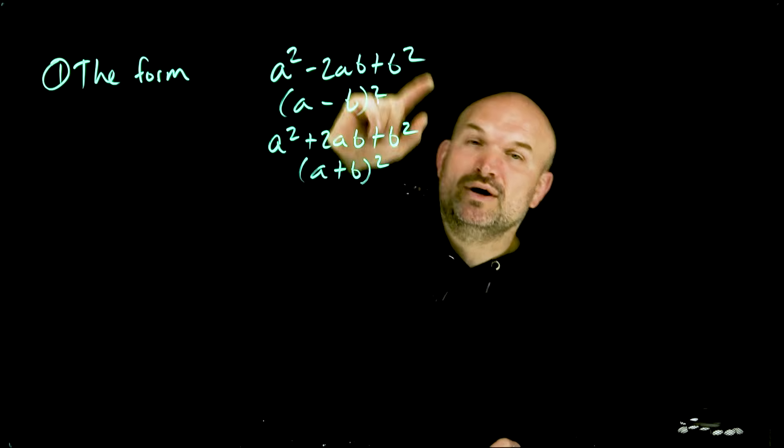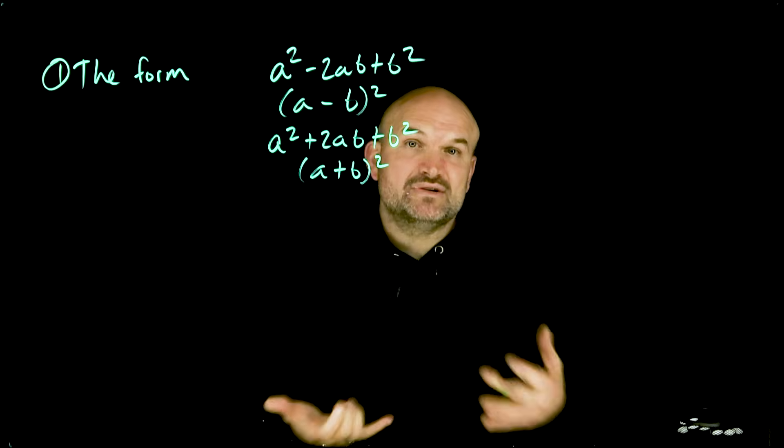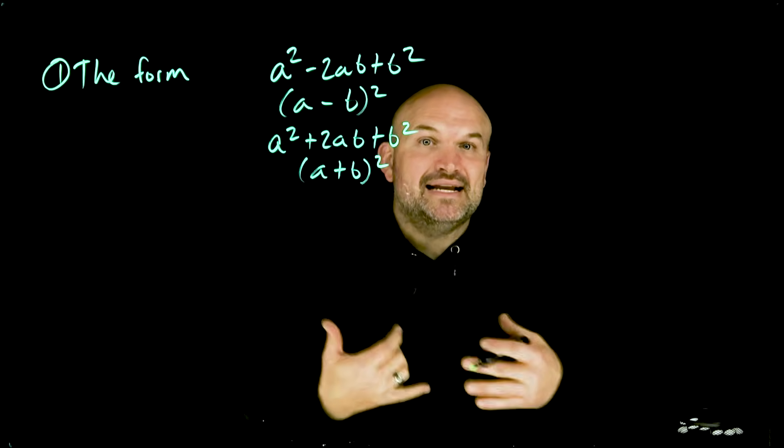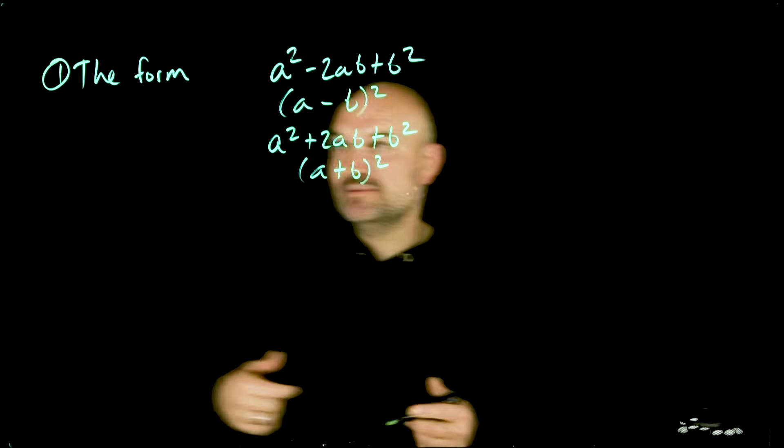The important thing though is to identify what your a and your b is, and those are going to be your square numbers. So that comes into the next thing: being able to identify our square numbers.